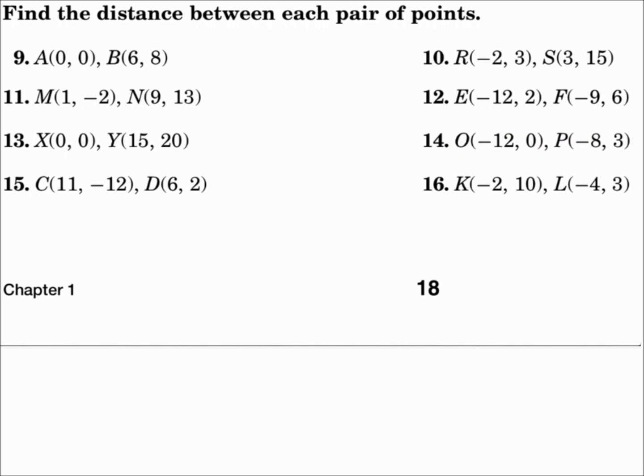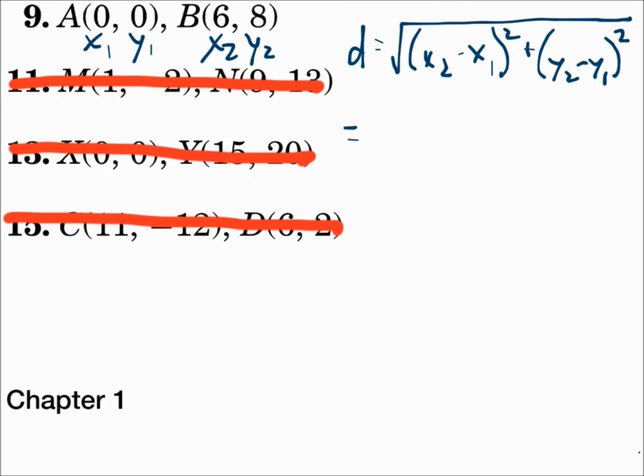Find the distance between each pair of points. For the points (0, 0) and (6, 8), feel free to label the first point x₁, y₁, and the second one x₂, y₂, and we'll substitute the numbers in where they go. So, x₂ minus x₁ and y₂ minus y₁.